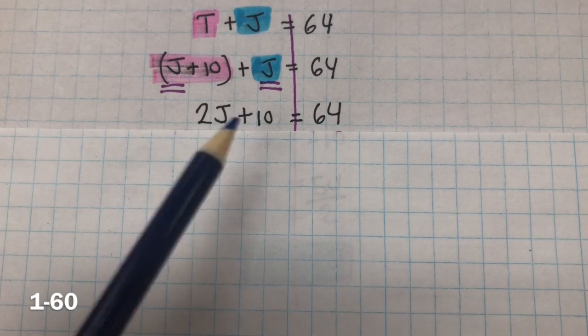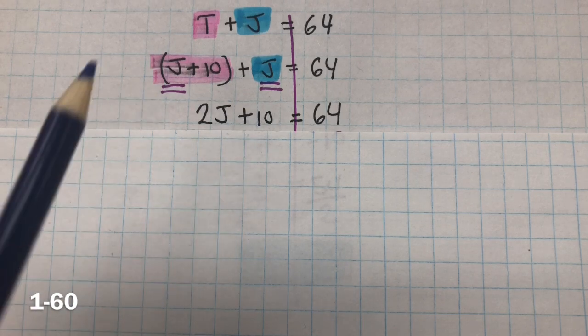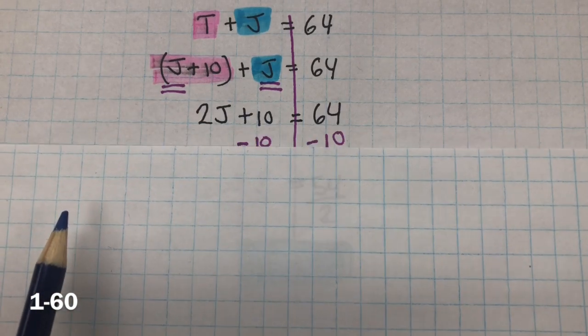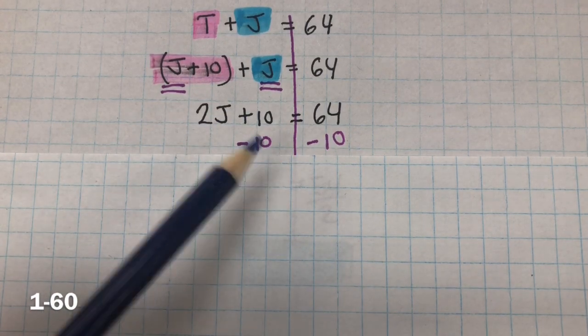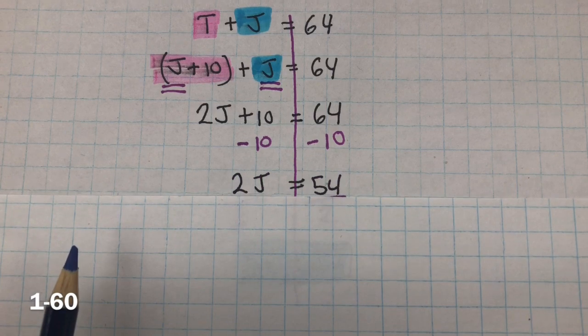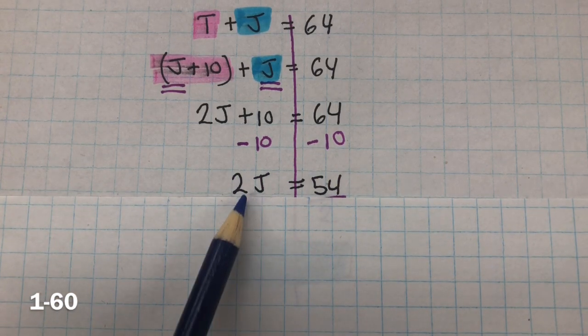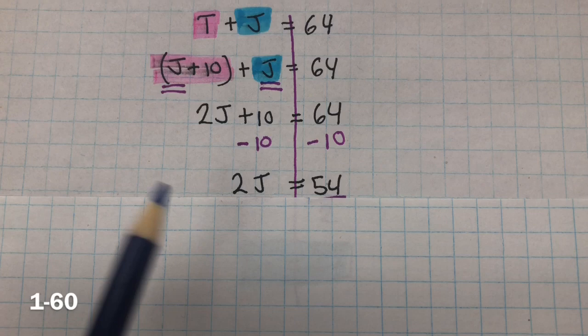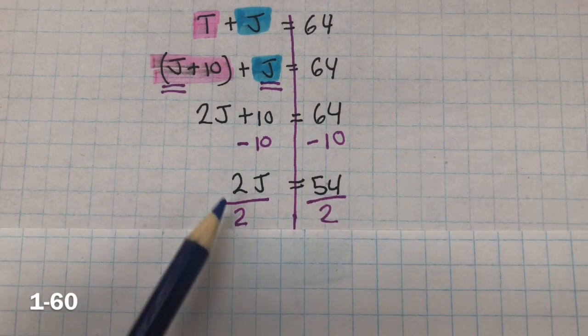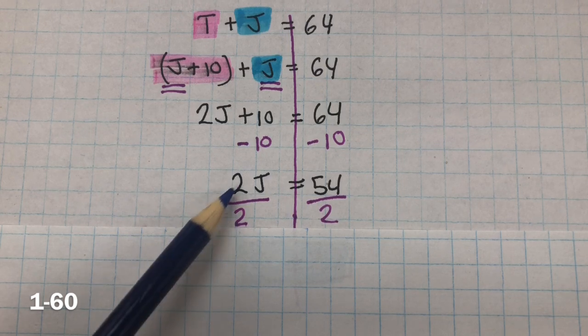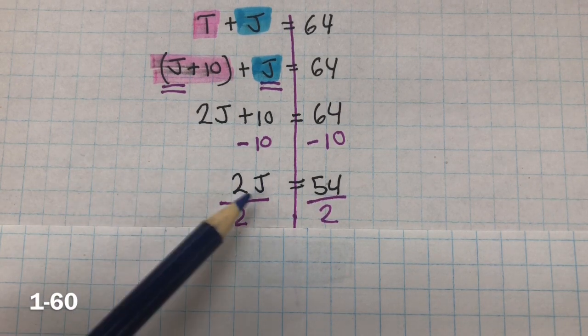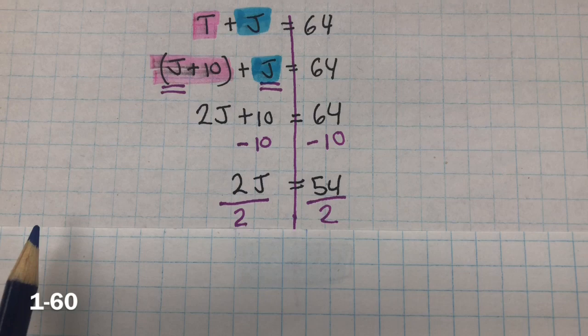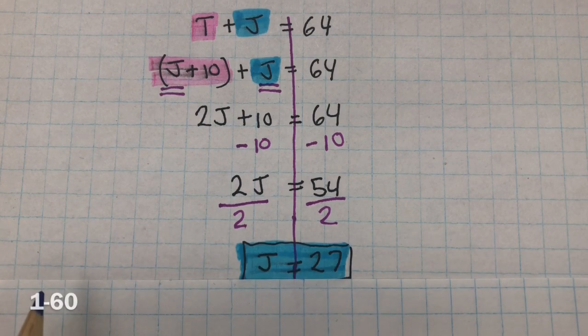Now, we're going to do inverse properties. So, inverse property of addition is subtraction. So, we're going to subtract 10 from both sides. This creates a zero pair. And 64 minus 10 equals 54. Inverse property of multiplication is division. So, we're going to divide both sides by 2. The reason why we chose 2 is because this creates a giant 1. 2 divided by 2 is 1. And 1 multiplied by j, identity property of multiplication, equals j. And 54 divided by 2 equals 27.